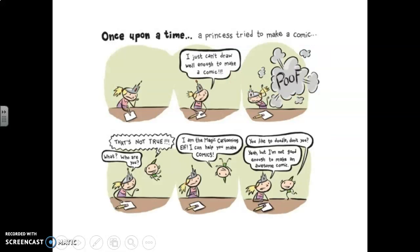Here we've got some more. Once upon a time a princess tried to make a comic. In the first picture she's not saying anything. In the next picture she says, 'I just can't draw well enough to make a comic.' In the next picture — poof! Now this is an action word; it shows the sound of something that's happening. 'That's not true.' 'What?' 'Who are you?' 'I am the magic cartooning elf, I can help you make comics.' 'You like to doodle, don't you?' 'Yeah, but I'm not good enough to make awesome comics.' In each picture you learn a little bit more — it's a bit like watching TV but reading it, because most of the story is people talking to each other.